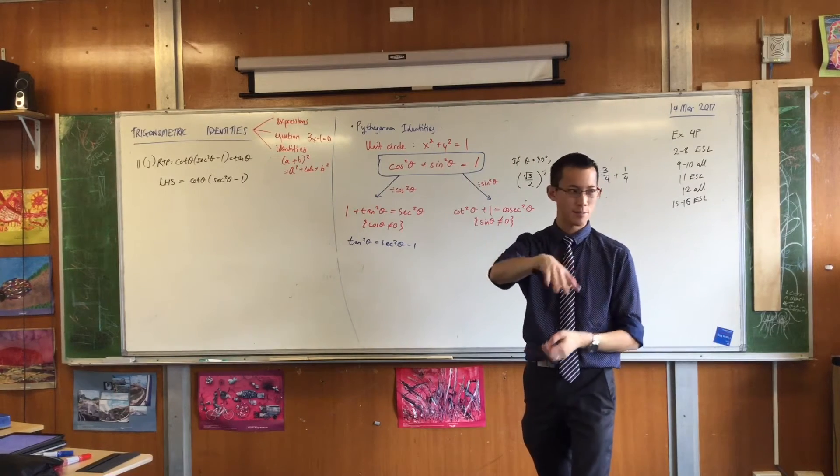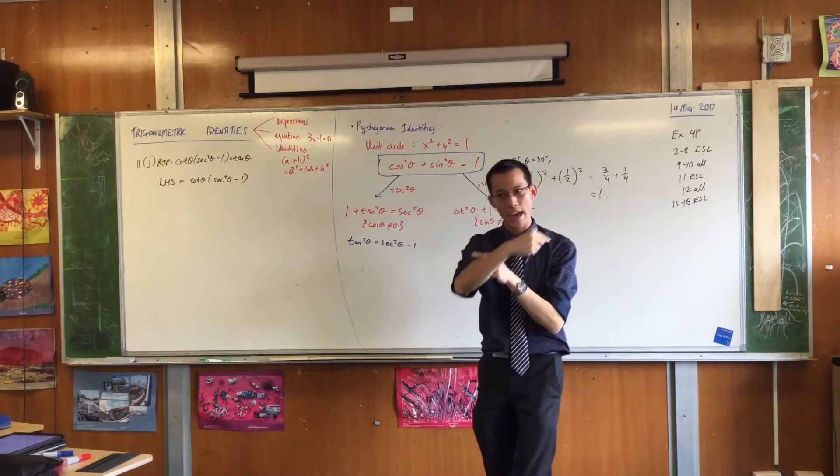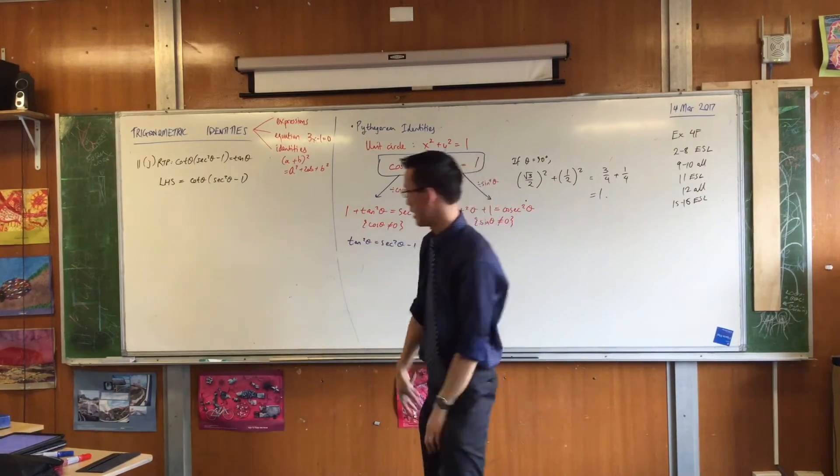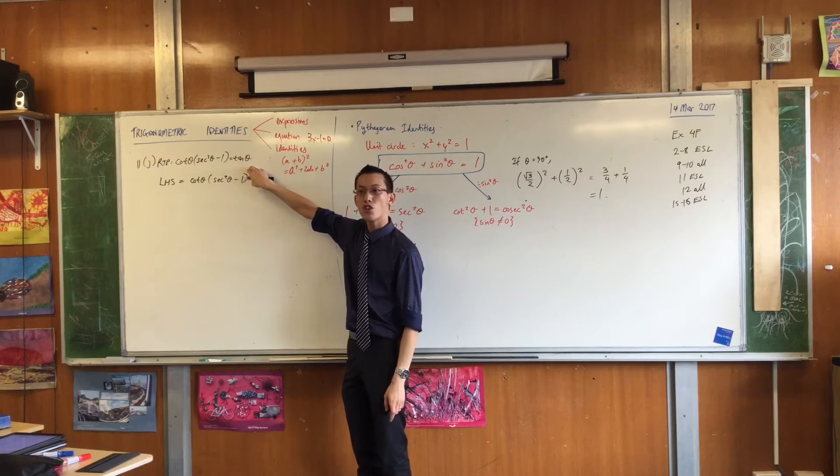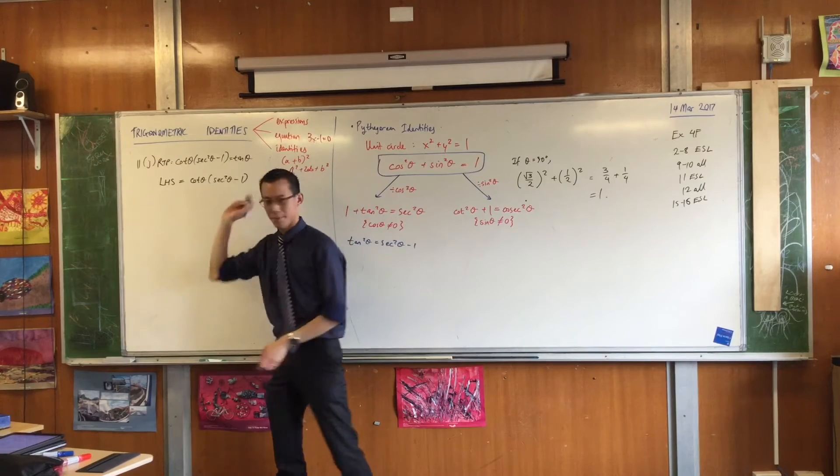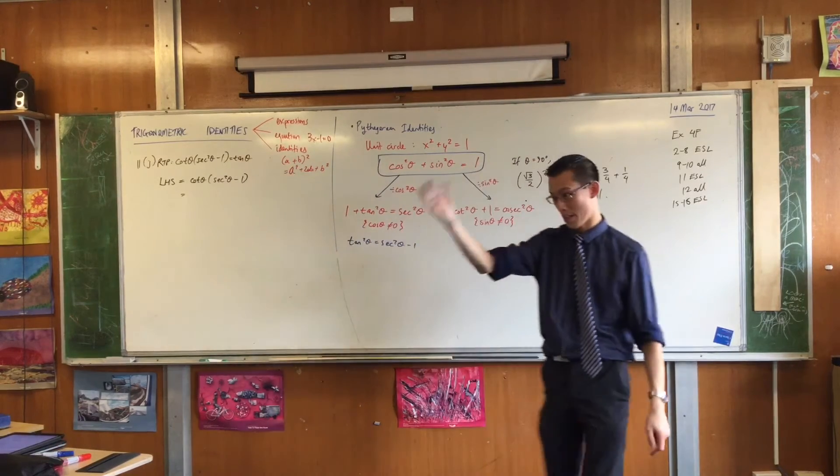You've got to know where you're heading rather than just simplifying blindly. I want to get a sine theta on a numerator and a cos theta on the denominator. Okay, so what can I do here? Now I'd like to take a suggestion. Yeah?